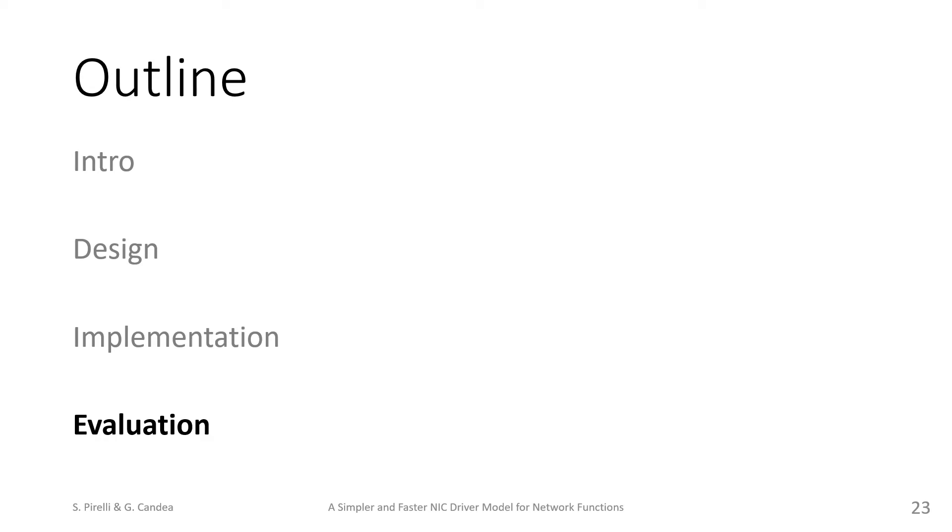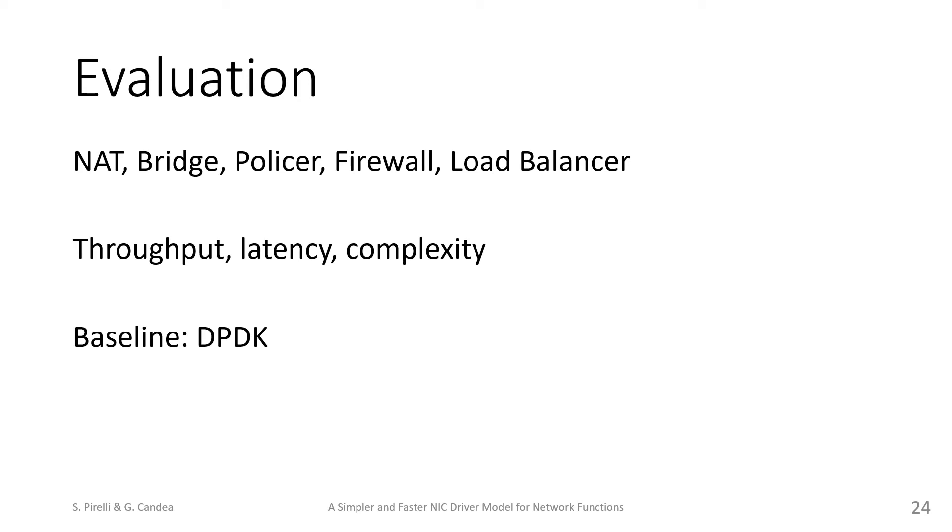Now let's see how well it performs. We used the same five network functions from the Vigor SOSP paper in our evaluation. A NAT, a bridge, a policer, a non-TCP firewall, and a load balancer. We compared our driver to DPDK on three main metrics. Maximum throughput without dropping packets, latency, and complexity.